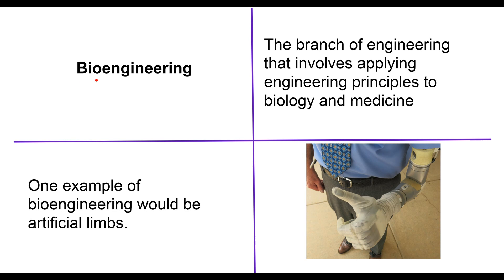The next word is bioengineering. We just talked about engineering, and now we're adding 'bio.' Biology is the study of life, so bio relates to living things. Bioengineering is the branch of engineering that involves applying engineering principles to biology and medicine. This is where we find a lot of medicine and other things that help prevent illnesses. One example of bioengineering would be artificial limbs.